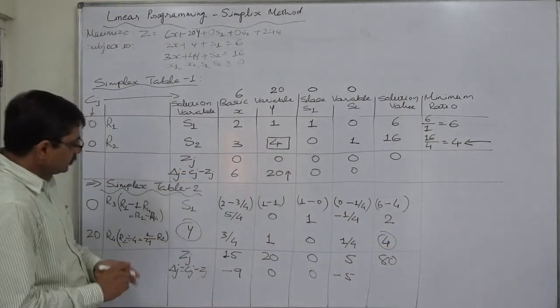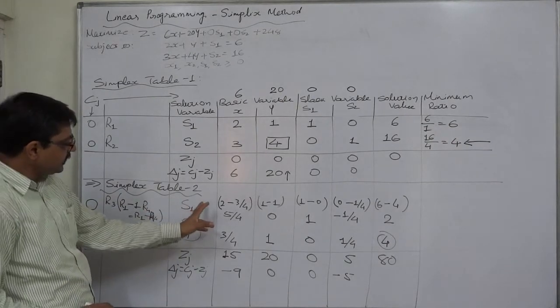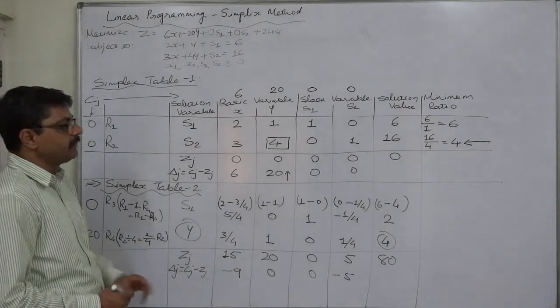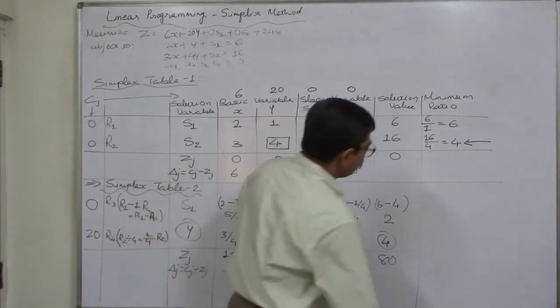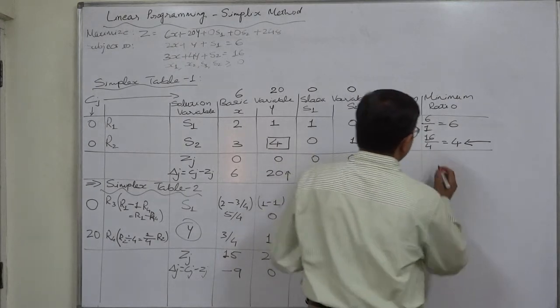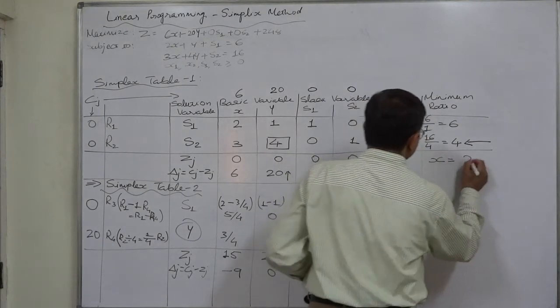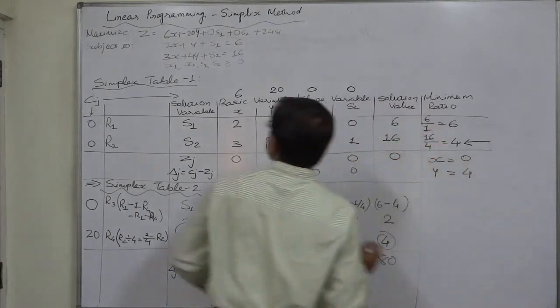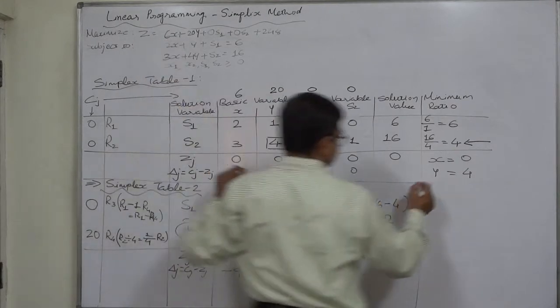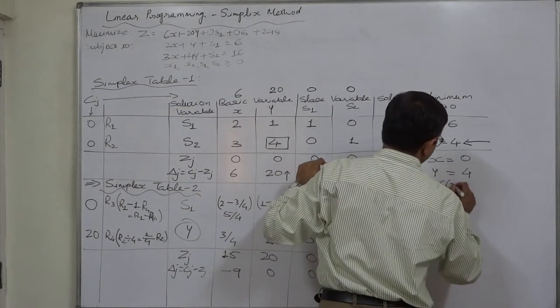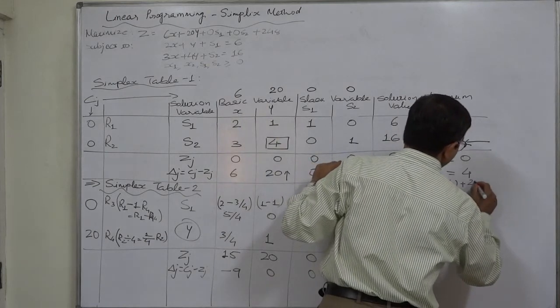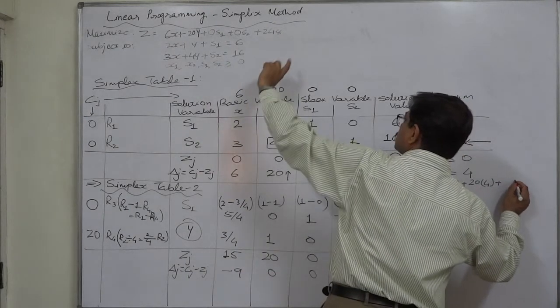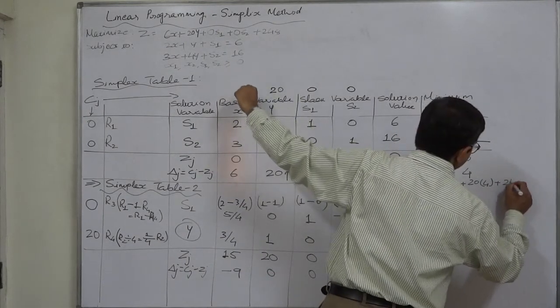The optimal solution at this stage is y equals 4. Since x has not entered the column of solution variable, the value of x in the optimal solution is 0. So the optimal solution according to this table is x equals 0, y equals 4. Z is originally 6x, that means 6 into 0, plus 20y, 20 into 4, plus 0 s1, 0 s2. So 0 plus 80, that is 80.